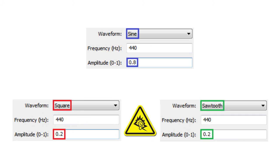A piece of advice: square and sawtooth waves are very loud, so while an amplitude of 0.8 is okay for a sine wave, I'd recommend you to lower the amplitude to 0.2 when generating a square wave or a sawtooth wave.